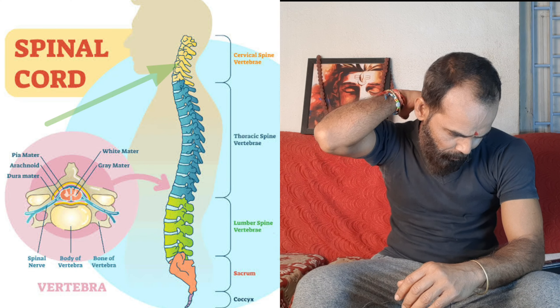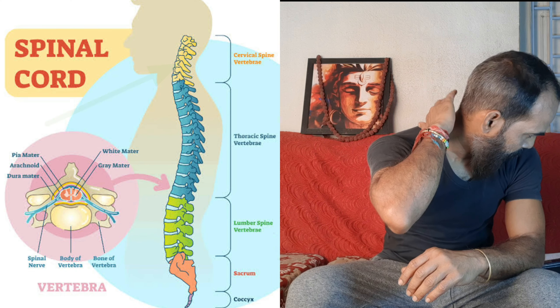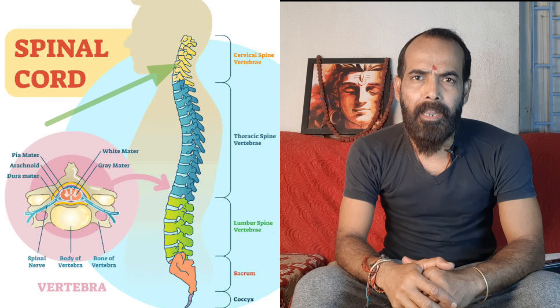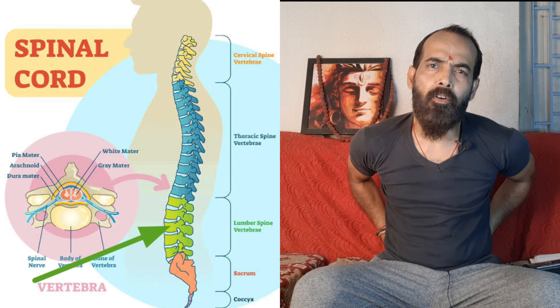Before moving forward with lumbar spondylitis — what are the asanas, what are the pranayamas, what are the things you need to do? First, let us learn something about our spinal cord. Our spinal cord is a pillar, the main part of our body. There are two parts: cervical and lumbar. Cervical means the starting point of your spinal cord, this area. And the lumbar is the end part of your spinal cord, which is the lower back. In this video, we will talk regarding the lumbar region area.